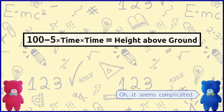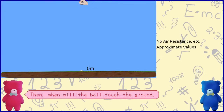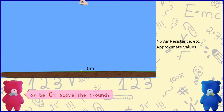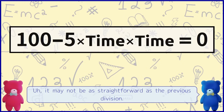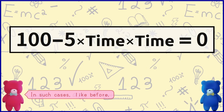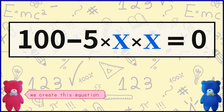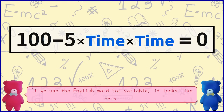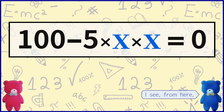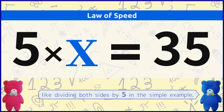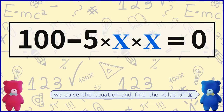It seems complicated. Then when will the ball touch the ground, or be 0 meters above the ground? It may not be as straightforward as the previous division, but it's okay. In such cases, like before, if we consider the time when it touches the ground as X seconds, we create this equation. If we use the English word for variable, it looks like this. From here, like dividing both sides by 5 in the simple example, we solve the equation and find the value of X.